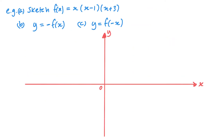Let's look at this example: sketch f of x equals x times (x minus 1) times (x plus 3). So I know that x is going to cross at 0, positive 1, and negative 3. So my graph is going to look something like this.